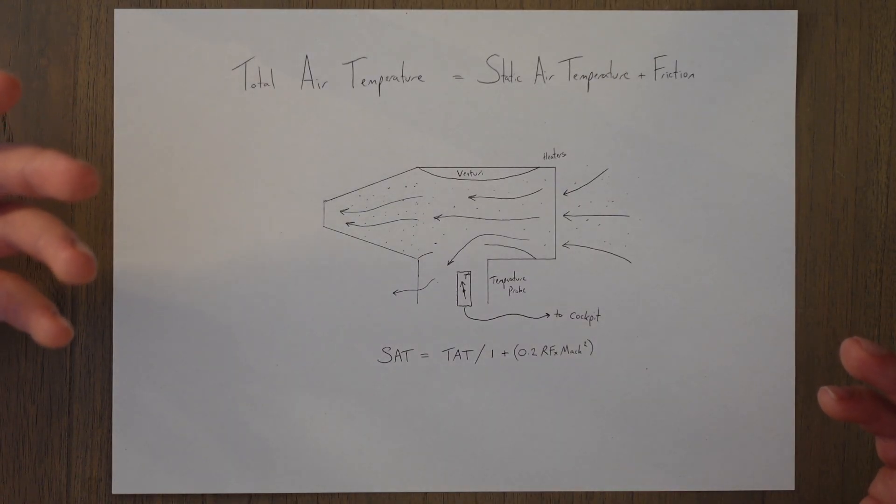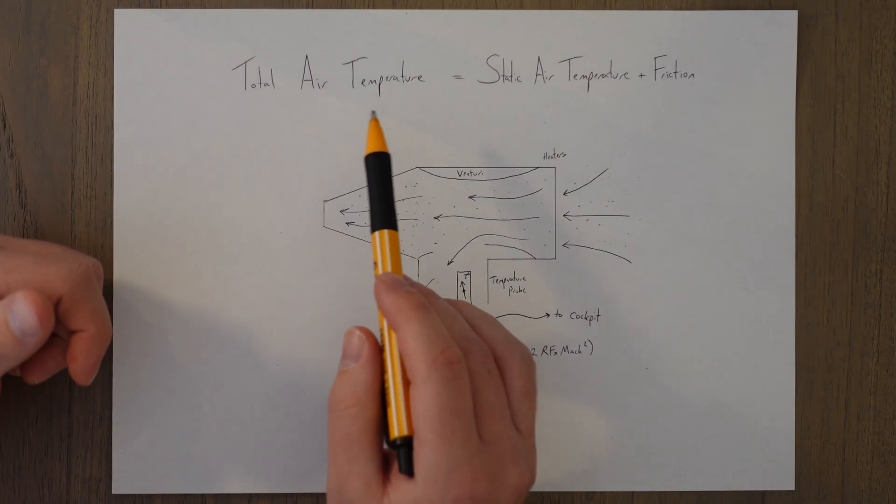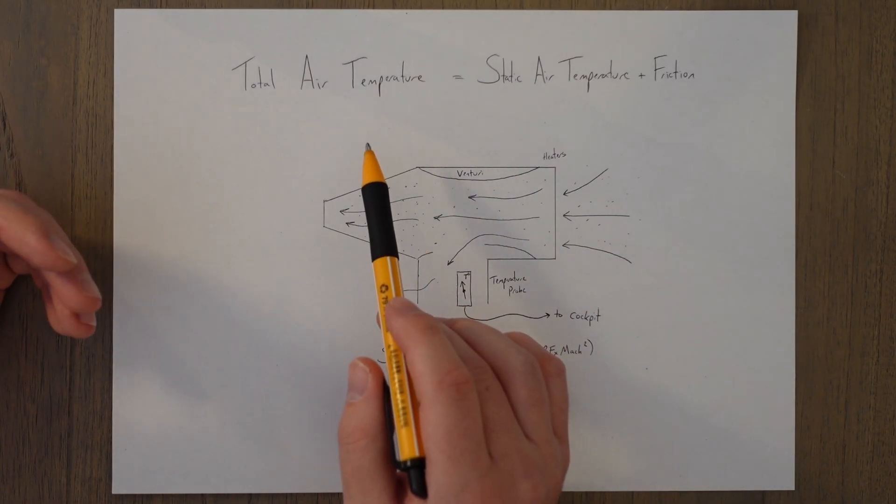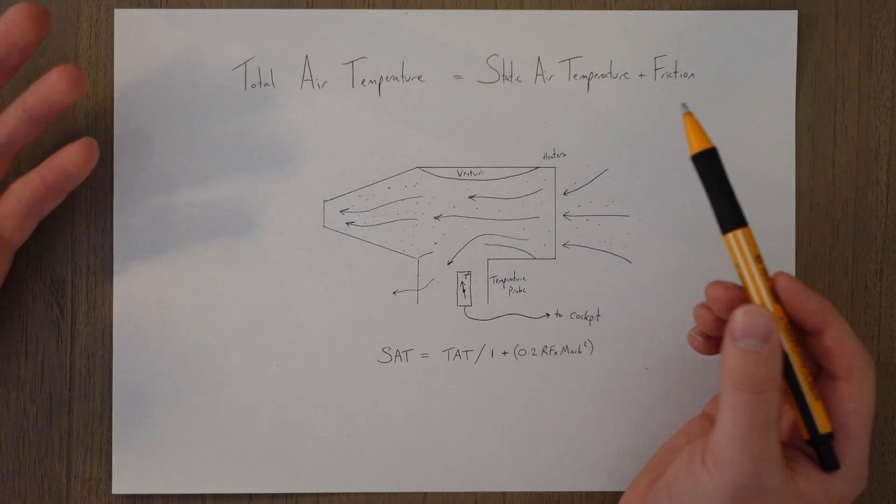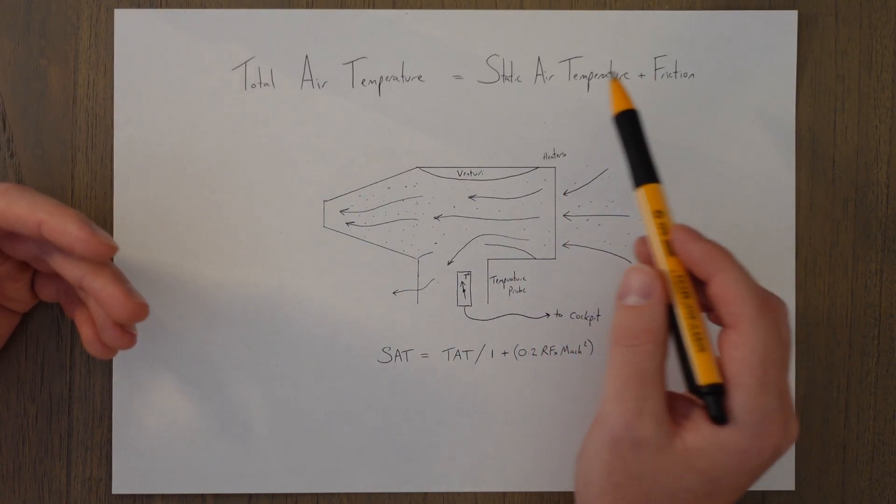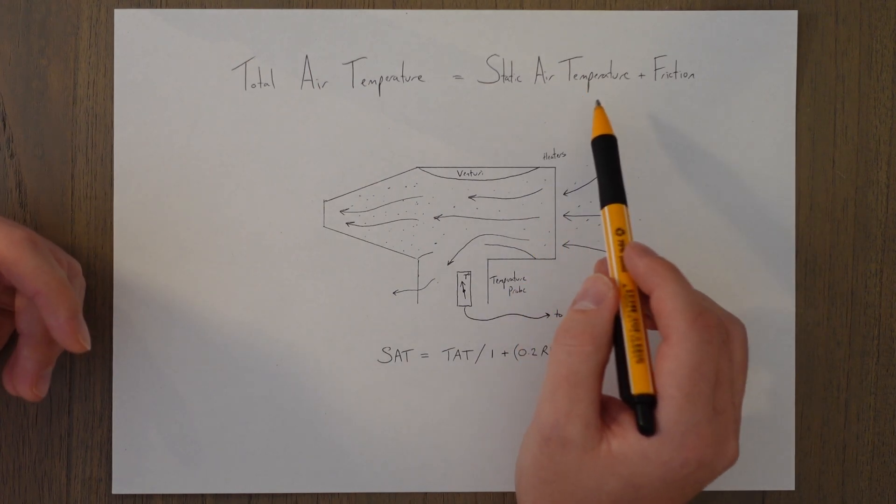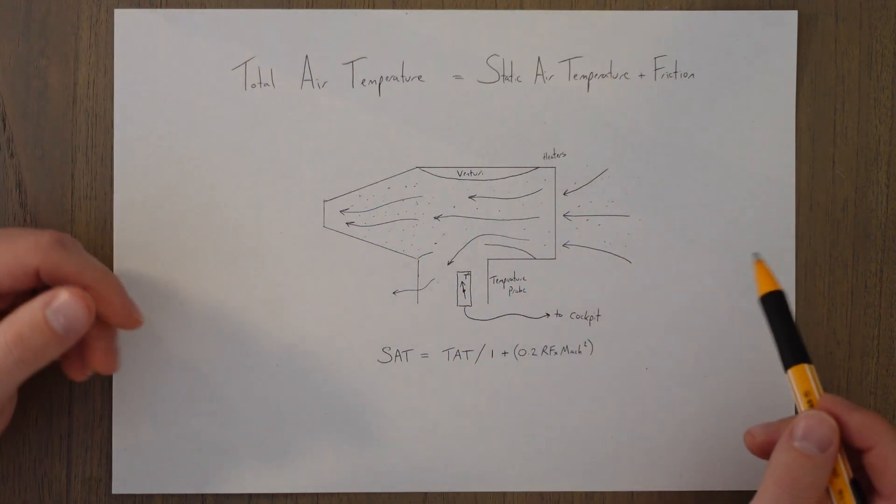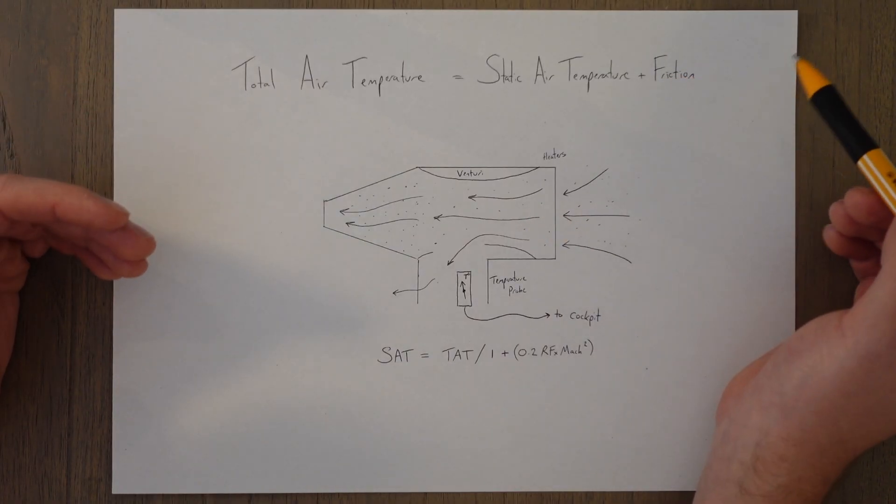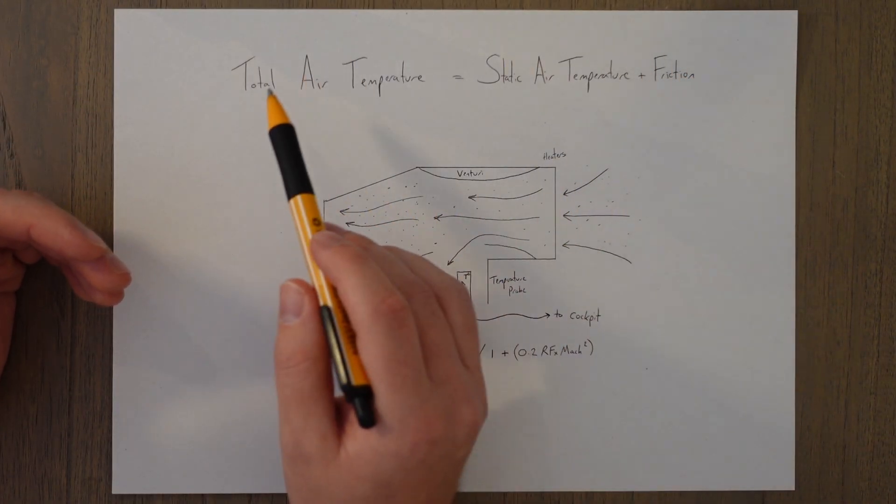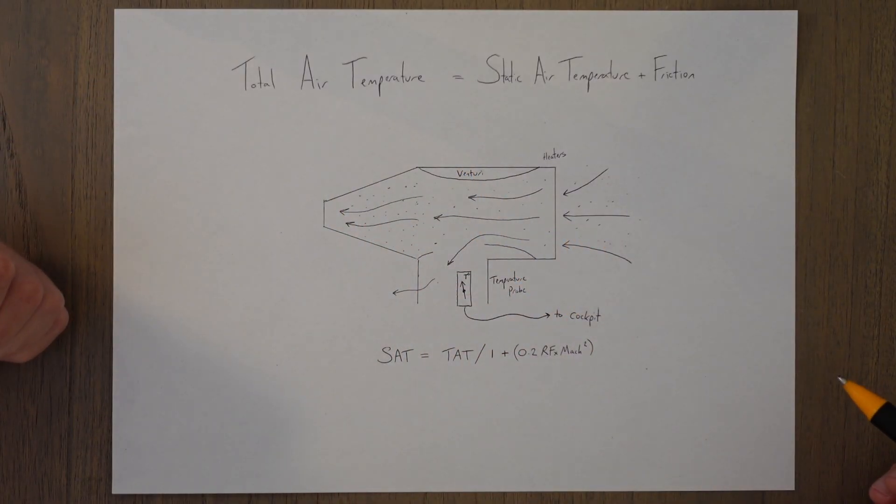We therefore measure something that we call a total air temperature, or TAT. And this is different from the actual air temperature, which is the static air temperature, which is sometimes referred to as the outside air temperature. So you get SAT, OAT and TAT. That's a bit confusing. And basically, when we add friction to the static air temperature, we then are going to be measuring the total air temperature.